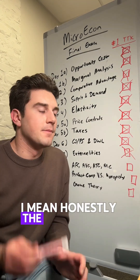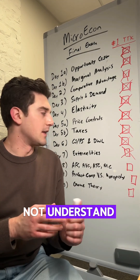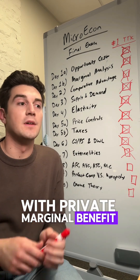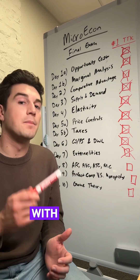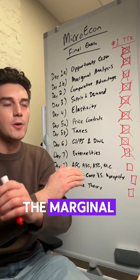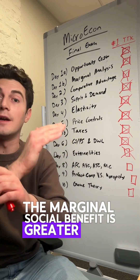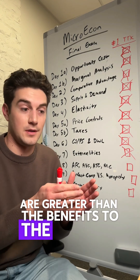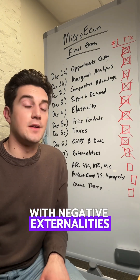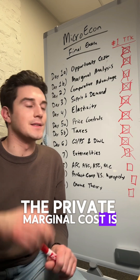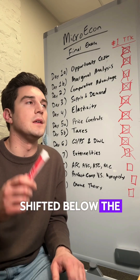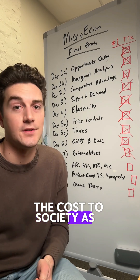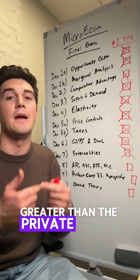Externalities. The biggest thing I see students not understand is that in the externality market with private marginal benefit and private marginal cost, with positive externalities the marginal social benefit is greater than the private marginal cost — the benefits to society are greater than the benefits to the private parties. With negative externalities, the private marginal cost is shifted below the marginal social cost, because the costs to society as a whole are greater than the private costs.